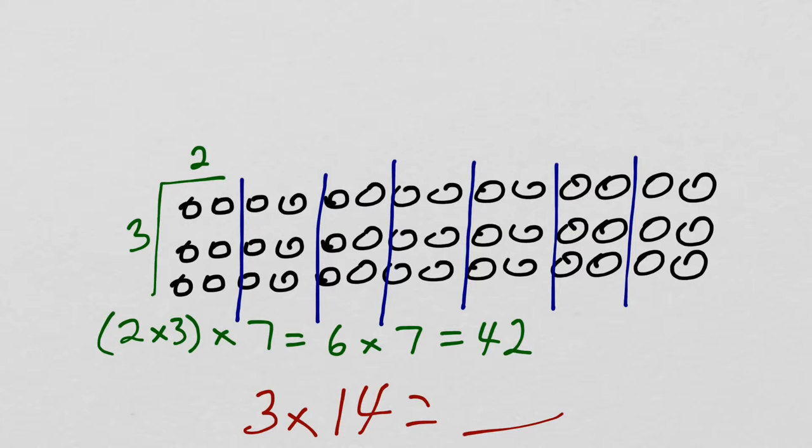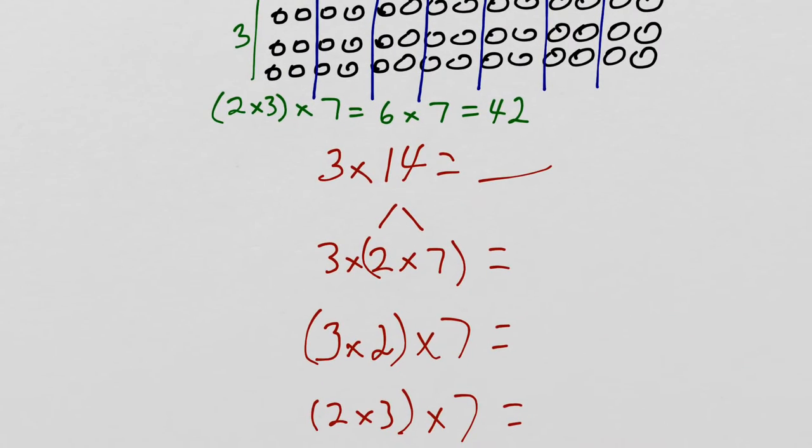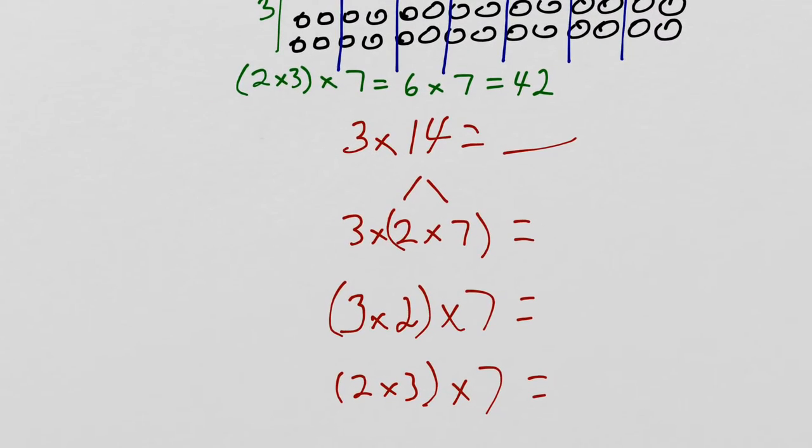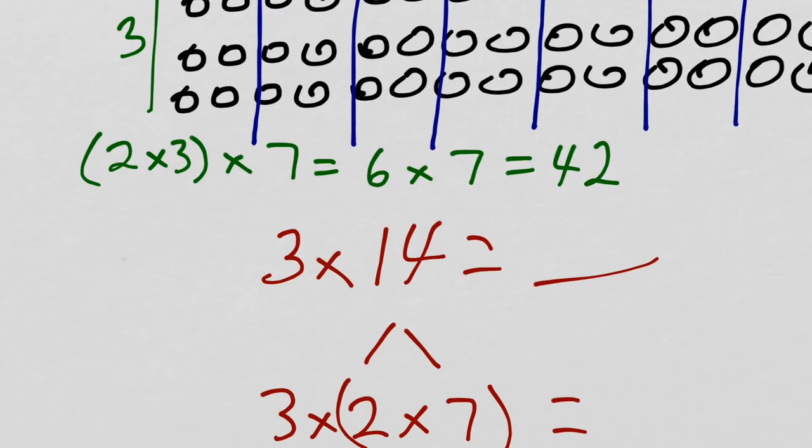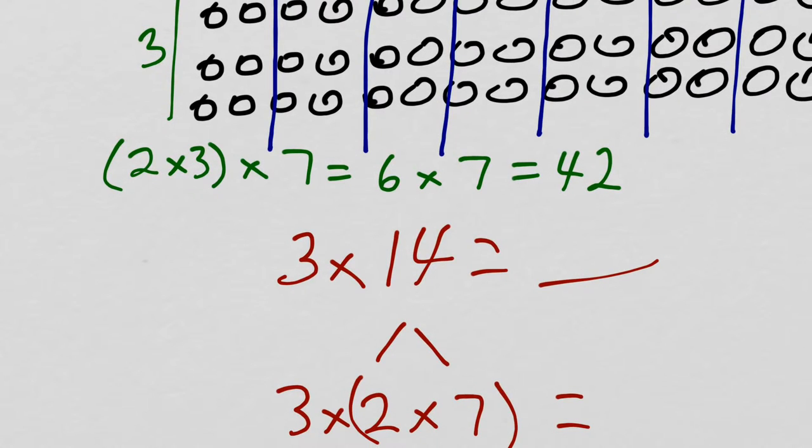So, what's the point of all this? The point is I can take a more complicated problem like 3 times 14 and use these special properties of multiplication to divide it up and rearrange it into a more solvable problem. 6 times 7 is going to equal the same thing as 3 times 14.